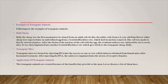Another example is transgenic mice. Transgenic mice are formed by injecting DNA into the oocytes and one- or two-cell embryos obtained from female mice after hormonal treatment. After injecting the DNA, the embryo is implanted into the uterus of the respective female or foster females.